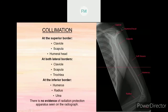For collimation: at the superior border, we can see the structures of clavicle, scapula, and humeral head. At the lateral border, we can see the structure of clavicle and also the trochlea. At the inferior border, we can see the structures of the humerus, radius, and ulna. There is no evidence of radiation protection present on the radiograph.